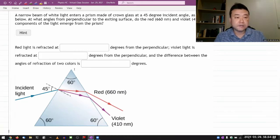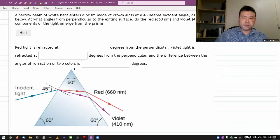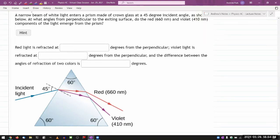A narrow beam of white light enters a prism made of crown glass at a 45-degree incident angle. Since it's an angle in the figure, it's probably not randomized. But let me label this theta naught, some incident angle, as shown below.